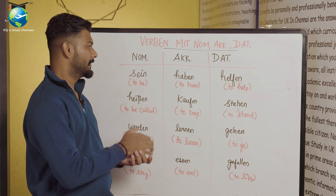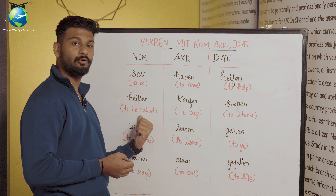I have 4 verbs here, and I have seen all these 4 verbs. I have some more verbs and some examples. In nominative case, the first verb is sein, which means 'to be.' The second verb is heißen, which means 'to be called.'